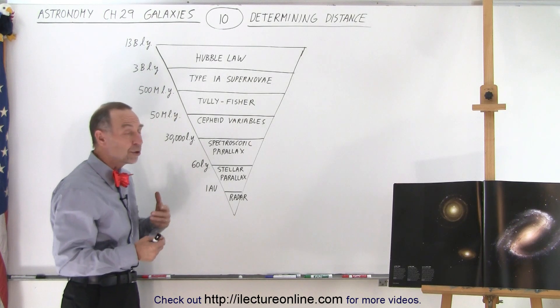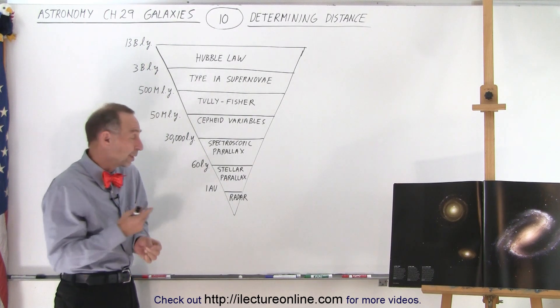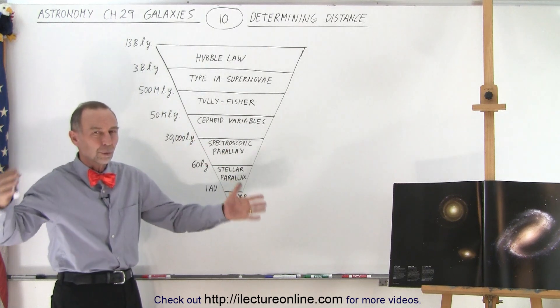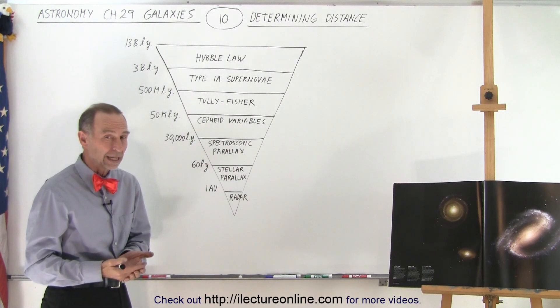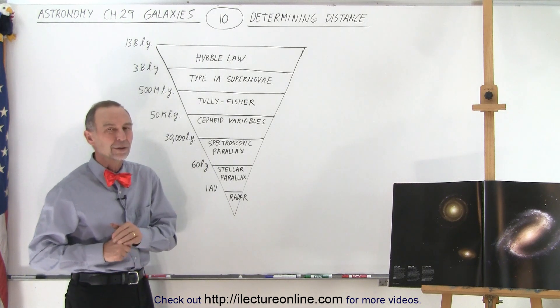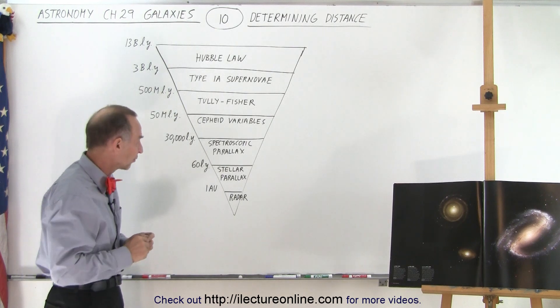Stellar parallax can be used for stars within about 60 light years. With some of our telescopes we can go beyond 60 light years, but it's limited to stars in our own general region of the galaxy. Stars on the other end of the galaxy can no longer be measured by stellar parallax because we simply cannot measure those tiny angles.